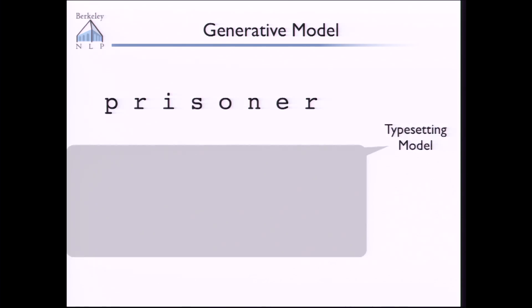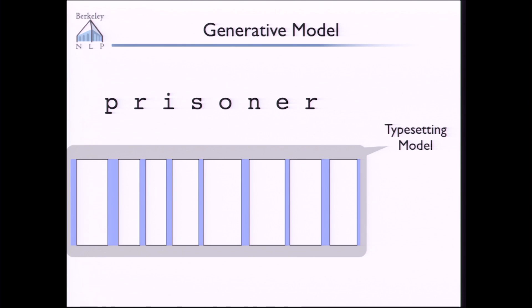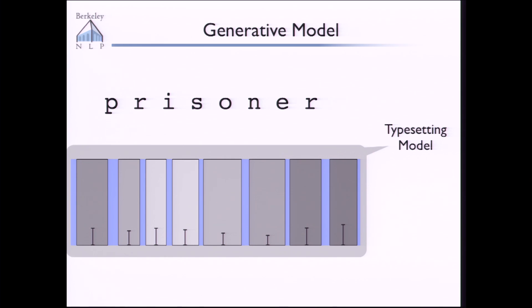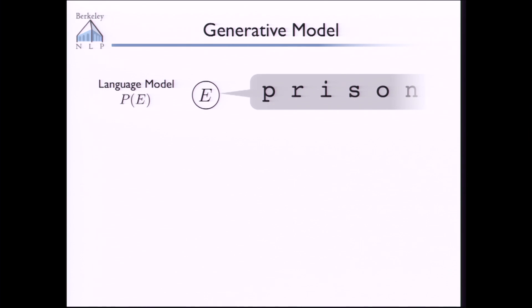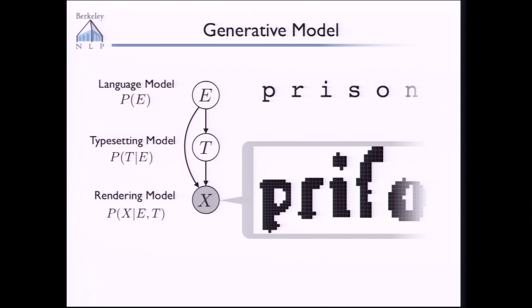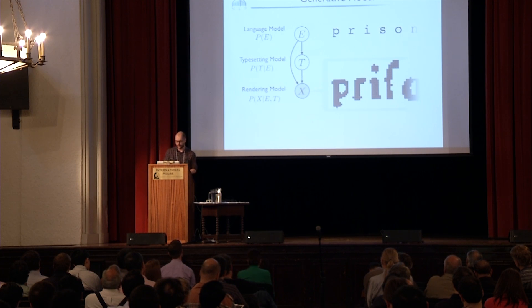As I mentioned, it's a generative model. First, we generate text character by character from a language model. Conditioned on that text, we generate typesetting information in a typesetting model — basically bounding boxes that will house glyphs. We then generate vertical offsets for the glyphs, which models the baseline, and also inking levels. Once we've generated all that information, we generate the pixel values themselves in a rendering model — all the way down to the level of pixels. This corresponds to a graphical model with a random variable E for the text, T for the typesetting information, and X for the actual pixel values. During learning and inference, the only observed variable is X. We use expectation maximization to learn the font parameters, and to do transcription we do inference on E.